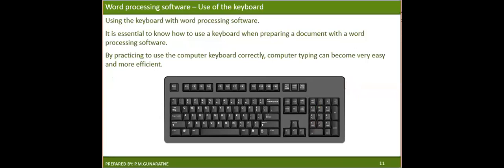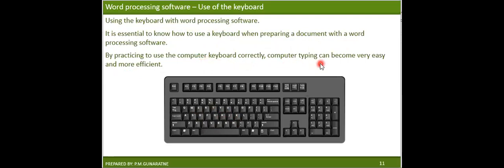The main input device to be used with word processing software is the keyboard. You have to understand how to use the keyboard properly. A standard keyboard comes with 104 to 108 keys, and these keys are named using different names. It is essential to know how to use the keyboard when preparing a document. By practicing to use the computer keyboard correctly, computer typing can become very easy and more efficient.